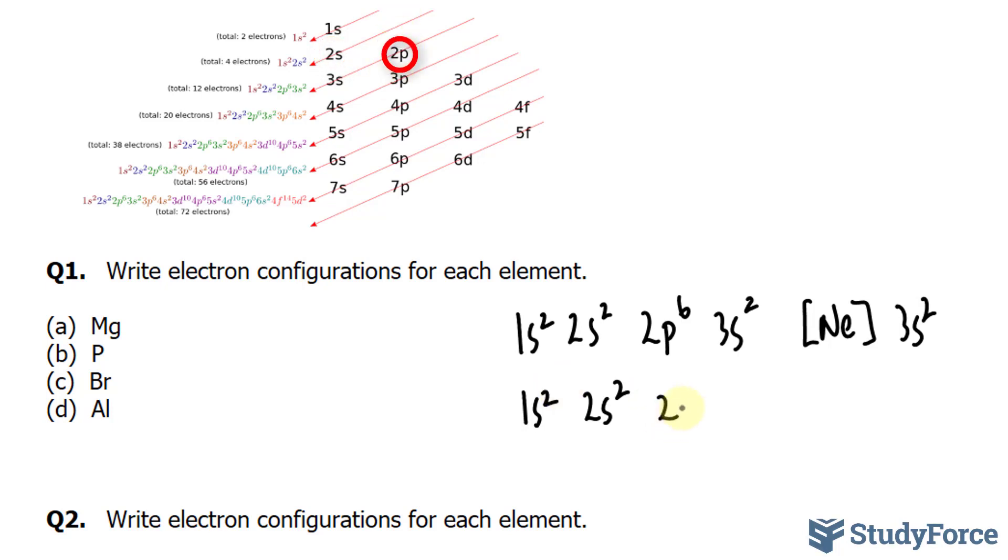Now, we open up 2p, and you can have up to 6 in this one. That's 10 altogether. We have 5 more left. In the 3s shell, we have 2, 3 more left, and we end up with 3p, we'll put 3p³.